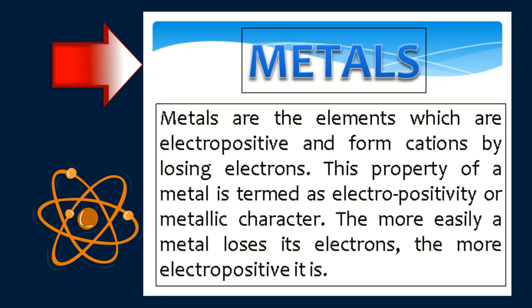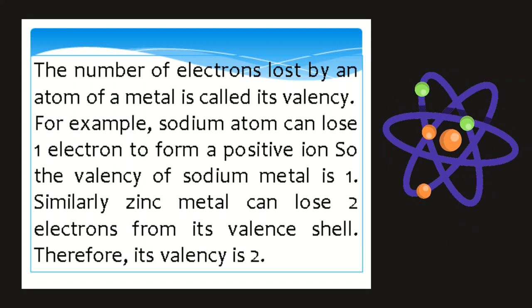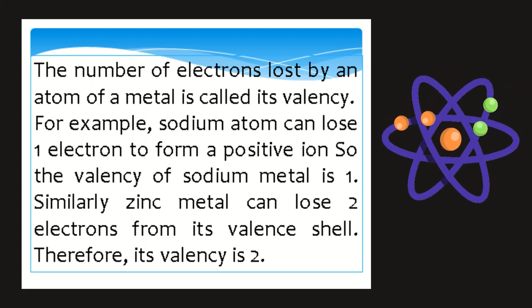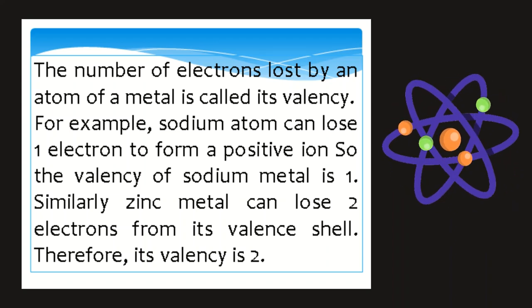The number of electrons lost by an atom of a metal is called its valency. For example, sodium atom can lose one electron to form a positive ion, so the valency of sodium metal is one. Similarly, zinc metal can lose two electrons, therefore its valency is two.